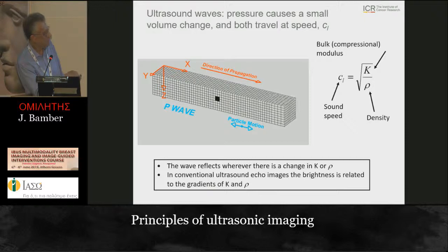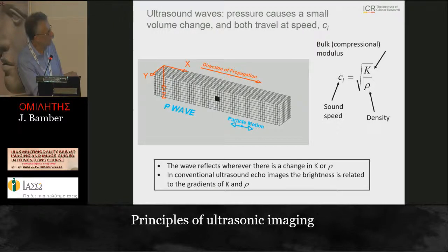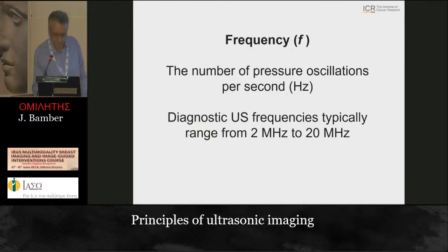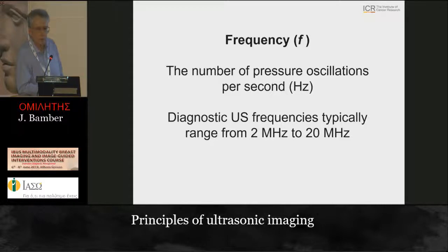We'll come back to that equation in a moment when we talk about how speed varies for different types of tissue. It's important because there's fat and other tissues in the breast, and that changes the speed of ultrasound since different tissues have different values for these properties. Frequency is the number of pressure oscillations per second, measured in Hertz or cycles per second.